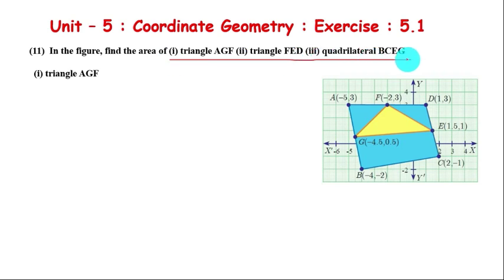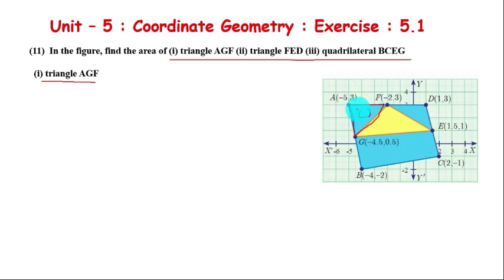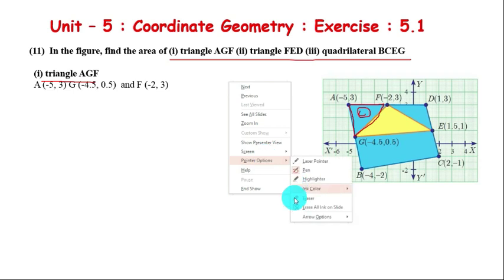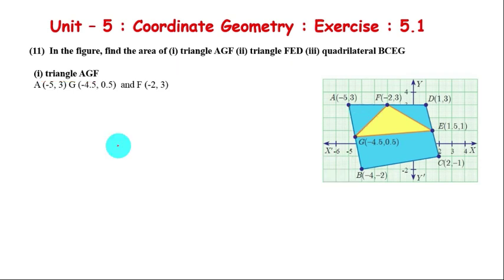First, we will calculate the area of Triangle AGF, using points A, G, and F. The area of a triangle formula is: 1/2 times the determinant of the coordinates.